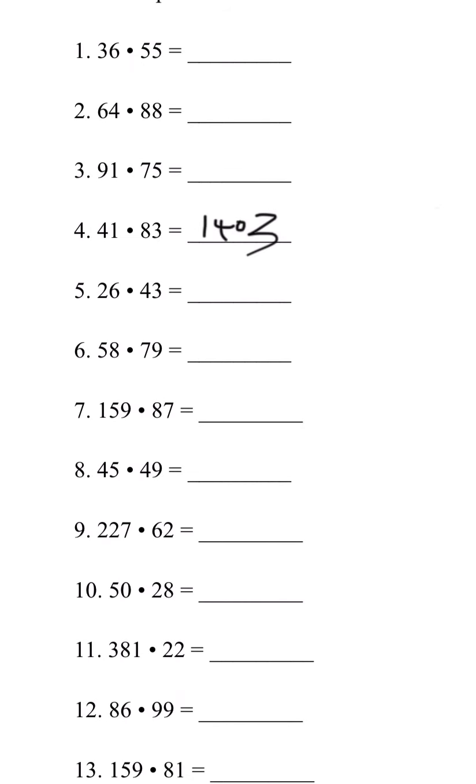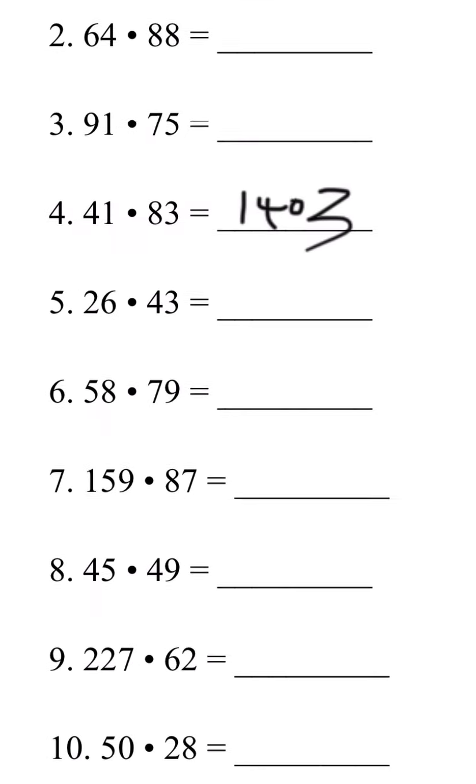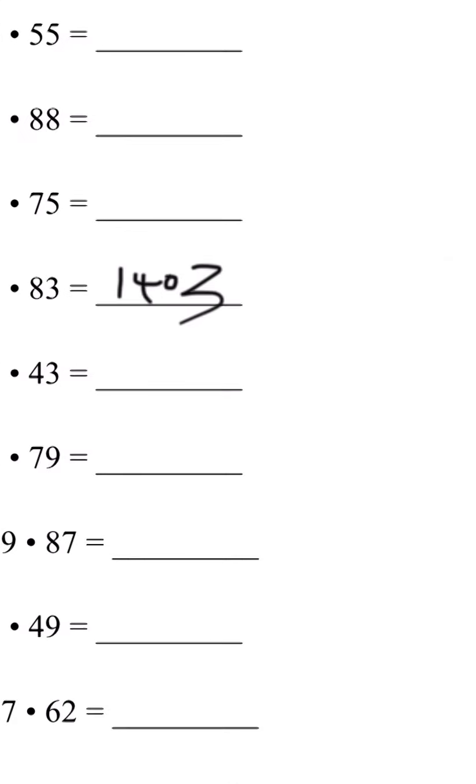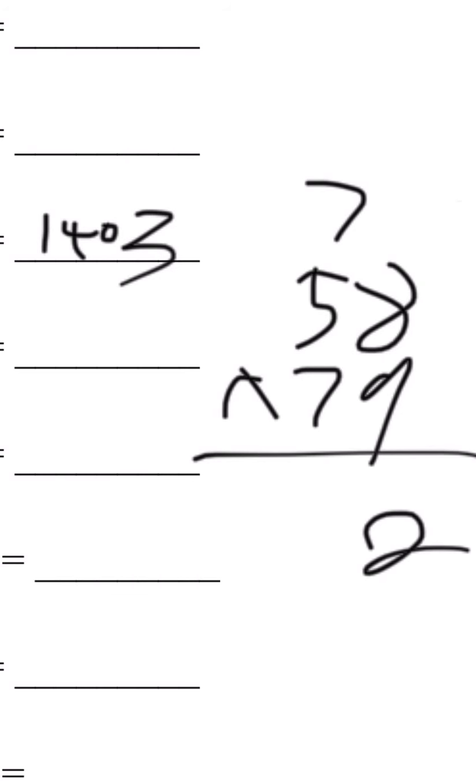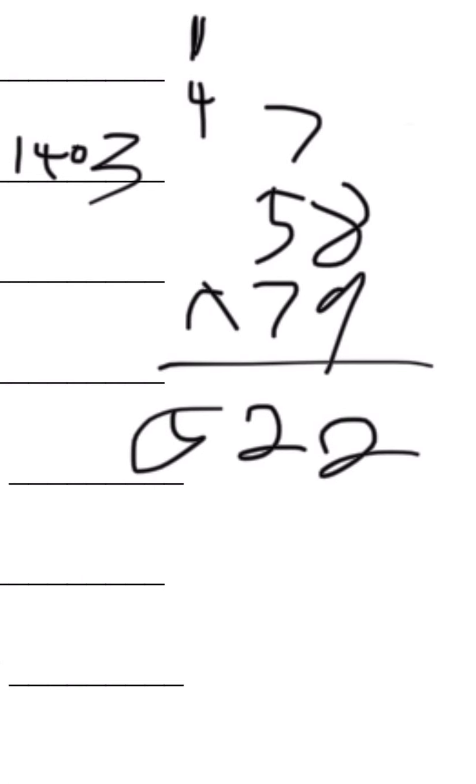Let's do number 6: 58 times 79. 8 times 9 is 72. 9 times 50 is 450. 70 plus 50 is 120. Write 1 on top of 4. 1 plus 4 is 5.